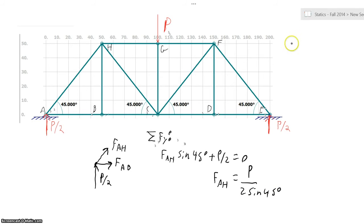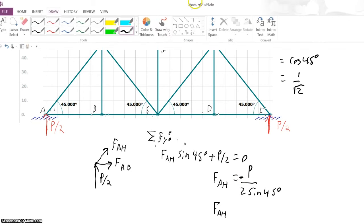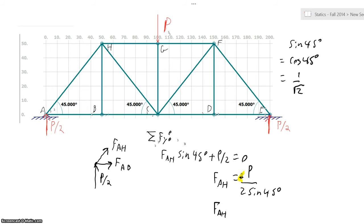For the rest of this video, it's important to note that the sine of 45 degrees is equal to the cosine of 45 degrees is equal to 1 over square root 2. Here we have FAH, and this one is negative. I forgot to change the sign. And that negative is important because it indicates that member AH is in compression, not tension. So FAH is equal to P root 2 over 2, negative. Let's go ahead and write this over here, P root 2 over 2.